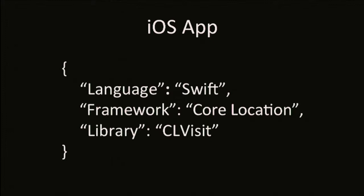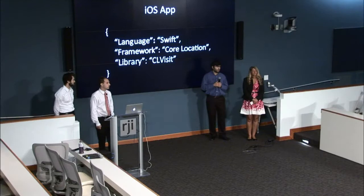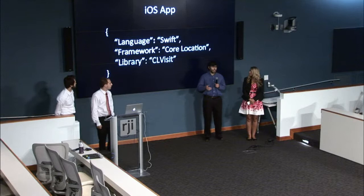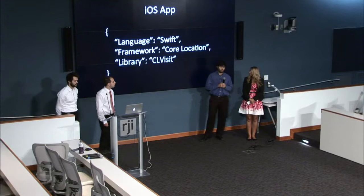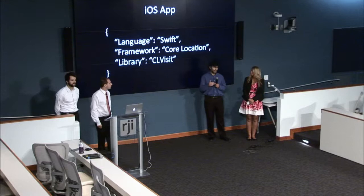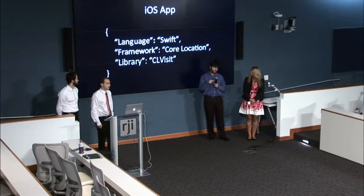We came across a problem with the Significant Location Change — it fires off randomly, and we wanted to check if the user was at a restaurant. Fortunately, over the summer Apple released a CL Visit API, which is what we're currently using. With this one, the app doesn't even need to be running. In the background, if it can see that you've been at a location for a certain period of time, it'll send notifications to our app in the background. When we open up the application, it'll send all of these notifications over to our recommendation engine, which will check to see if it indeed was a restaurant.